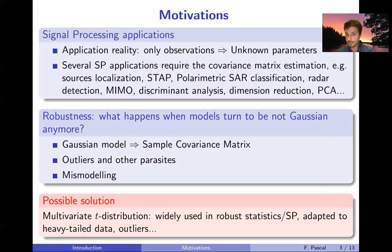So one possible solution we focused on in this work is to consider the multivariate T-distribution. Of course it's a widely used model both in statistics and signal processing and it's well adapted to heavy-tailed data and outliers thanks to this parameter that is the degree of freedom and that controls the shape of the distribution. So the T-distribution can model very heavy-tailed distributions as well as very close to Gaussian distributed data.